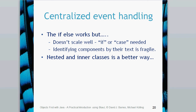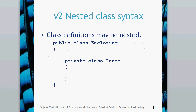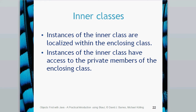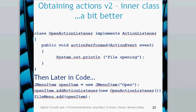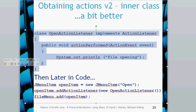The other way you can do it is using inner classes. You can actually put classes inside other classes and they become inner classes. Instances of that inner class are localised within the containing class, and they have access to the private fields of the class in which they're nested. So what we can do is implement an inner class — in our case the OpenActionListener inner class — which needs to implement the action listener, with the action performed method inside it.